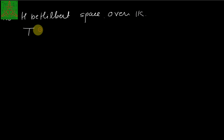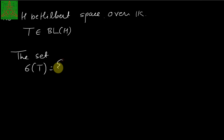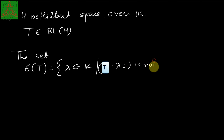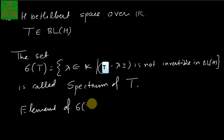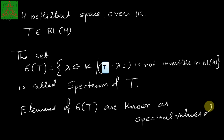Let H be a Hilbert space and T belong to BL(H), the set of all bounded linear operators on H. The spectrum σ(T) is defined as the set of all λ belonging to K such that T − λI is not invertible in BL(H). It is called the spectrum of T, and the elements of σ(T) are known as spectral values.